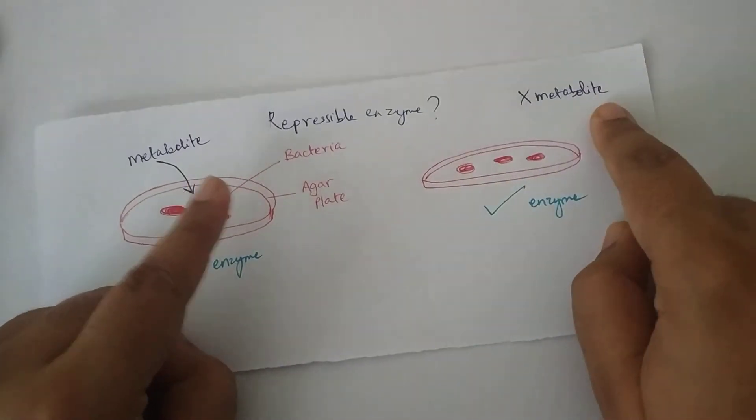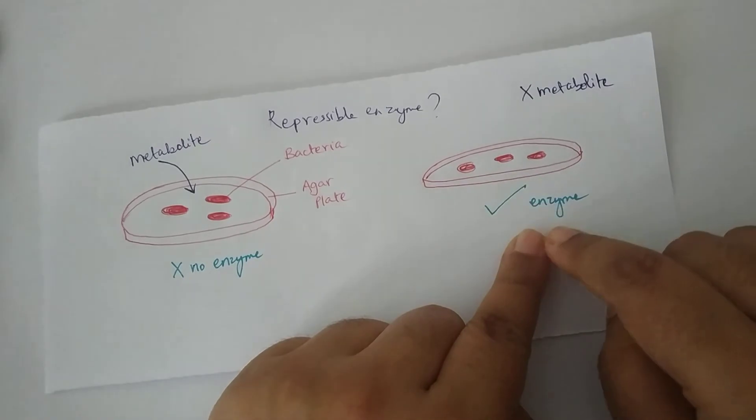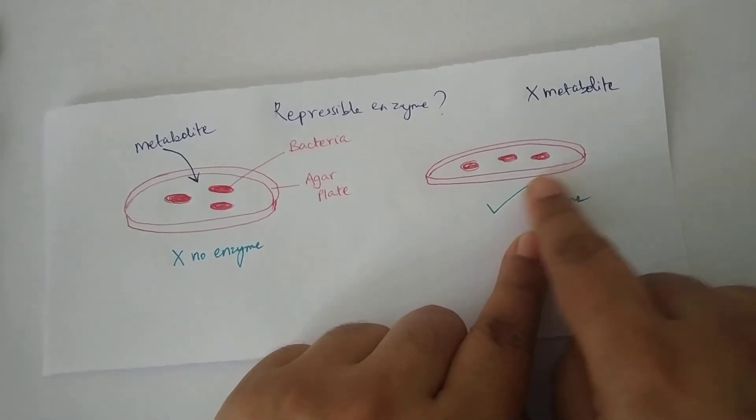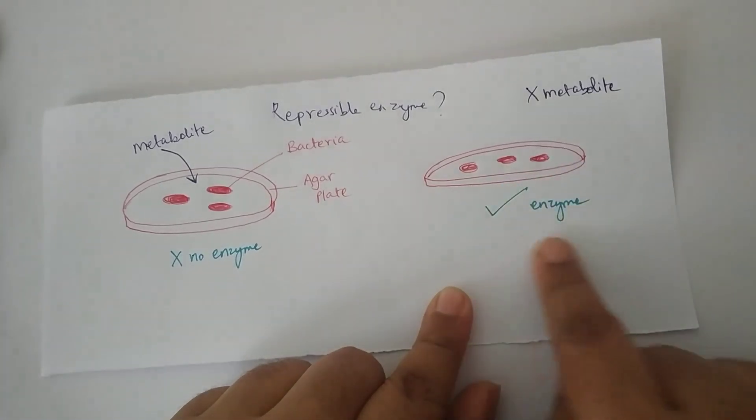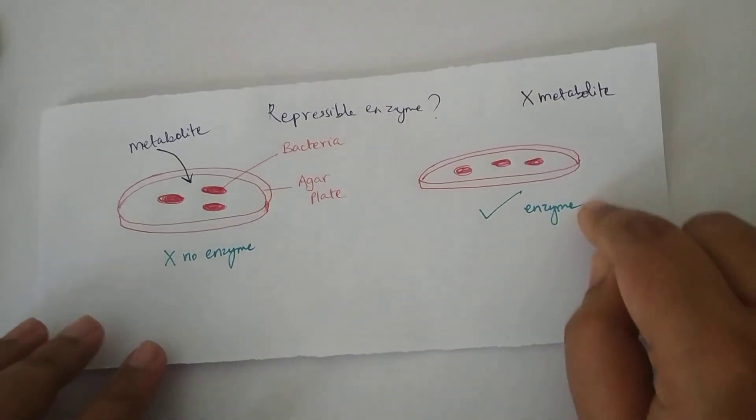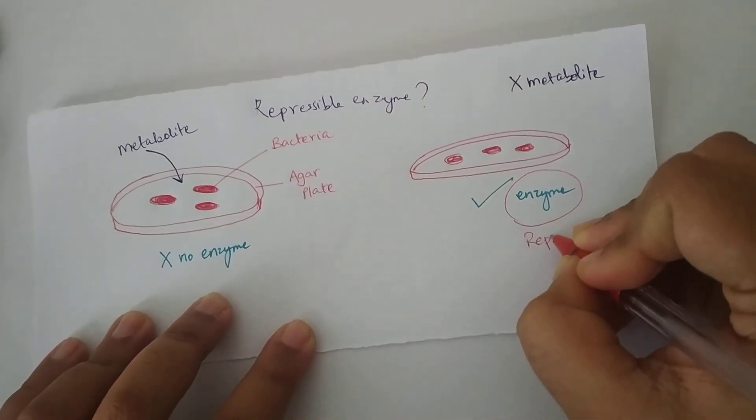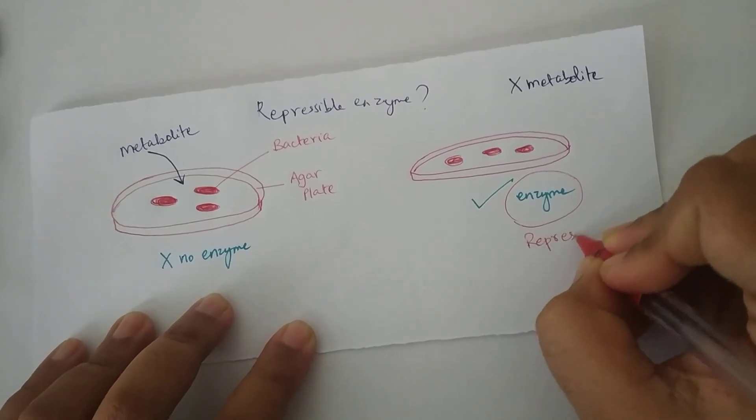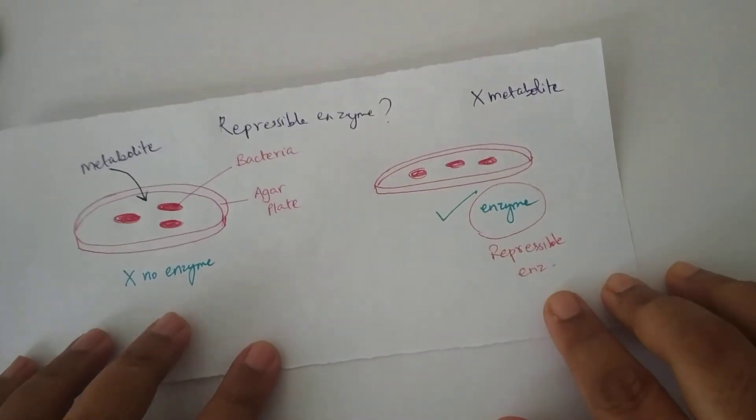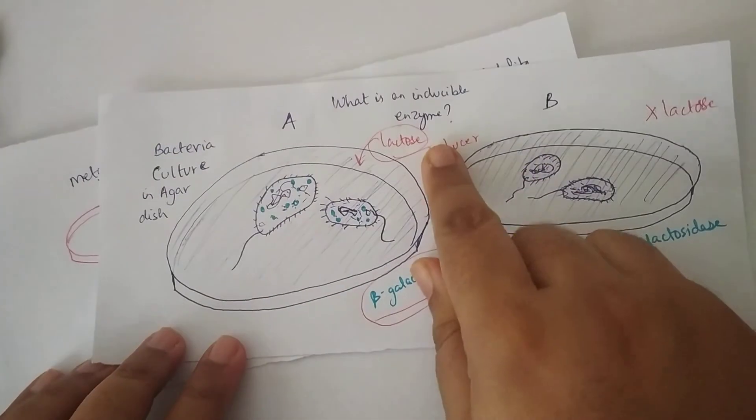Whereas in the absence of the metabolite the gene is switched on and it is getting transcribed, translated and the mRNA is helping in production of the polypeptides which will later become this enzyme after arrangement and folding. So this type of enzyme is called a repressible enzyme and inducible enzyme.